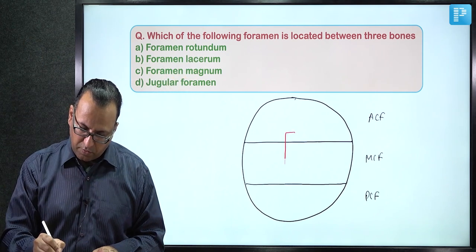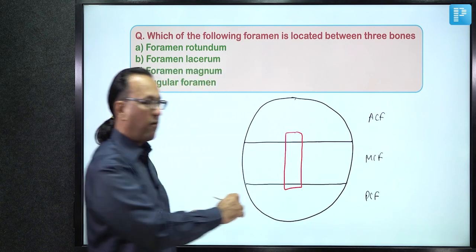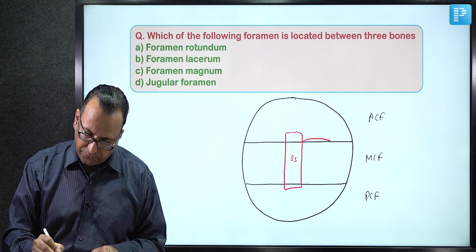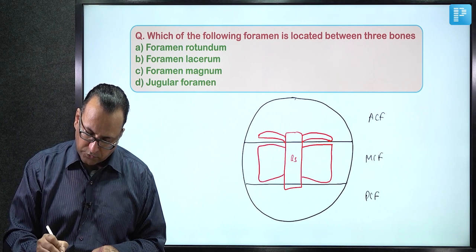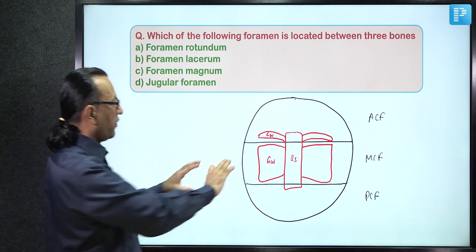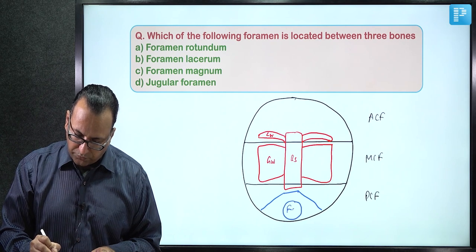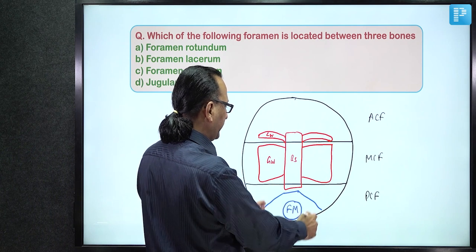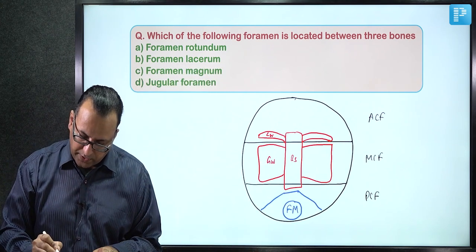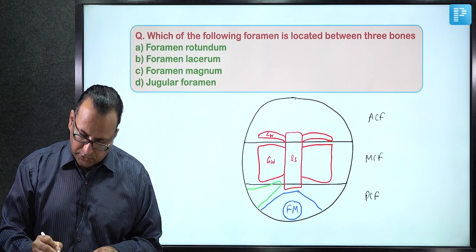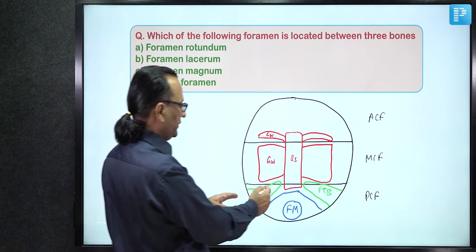The occipital bone forms the floor of the posterior cranial fossa and contains the foramen magnum. Between the sphenoid and occipital bones lies the petrous part of the temporal bone, with its apex reaching the body of the sphenoid. The ear is located inside the petrous temporal bone.